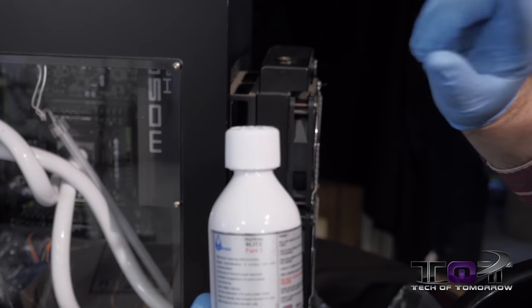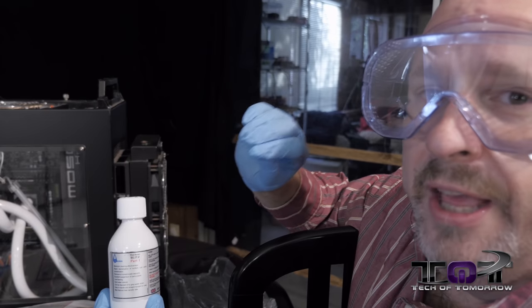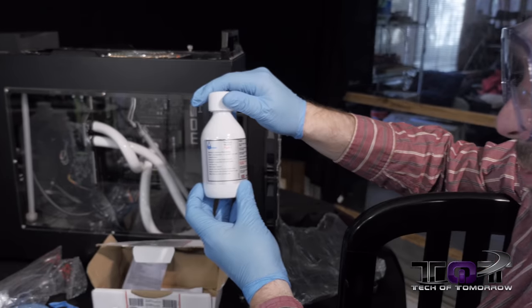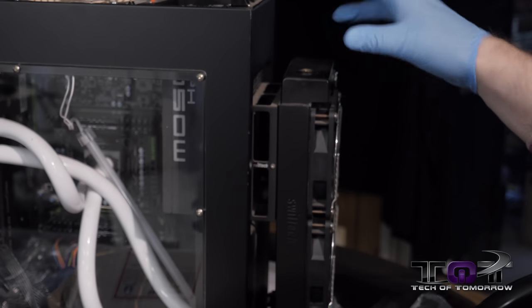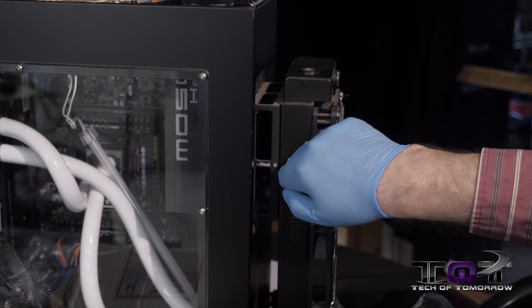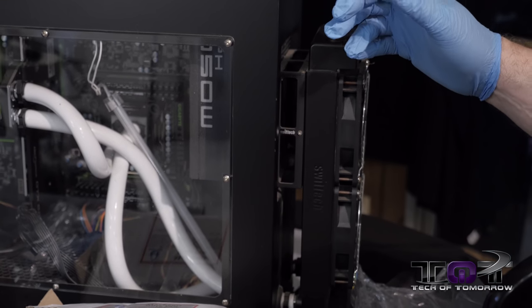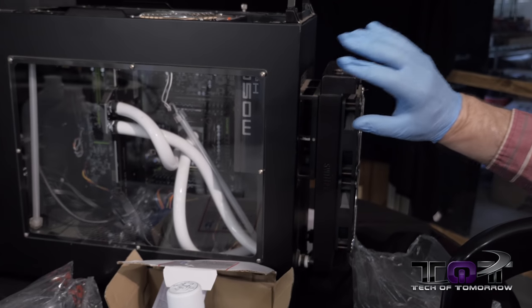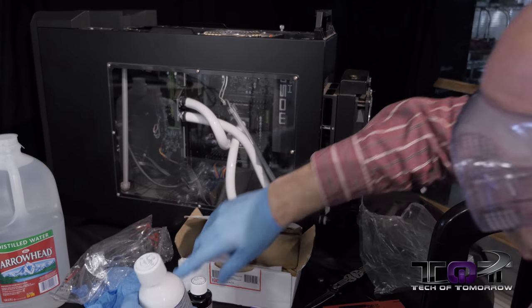You're going to have a drain tube or fill tube. With part number one, you mix it, follow the instructions, put it inside the machine, let it run with your pre-existing liquid for a few hours, then drain it. You redo that step again, drain the entire system again.